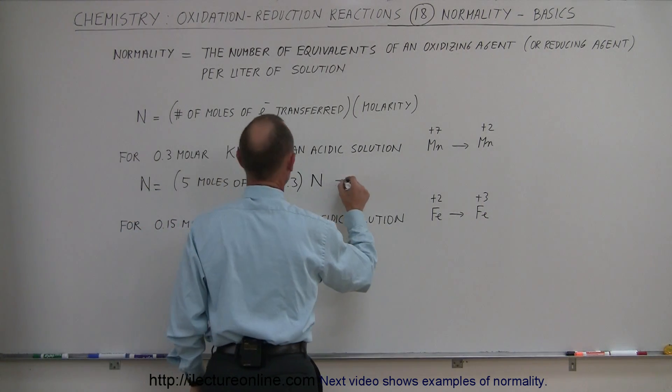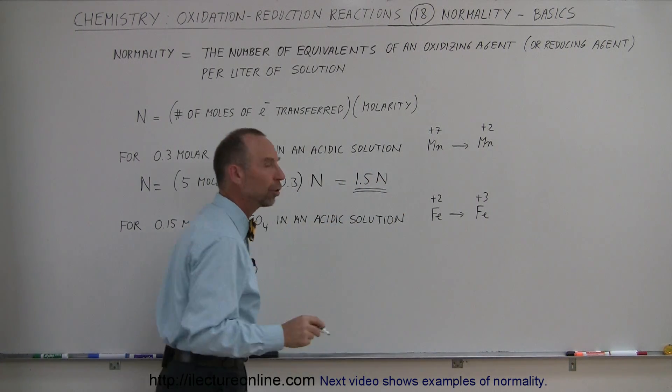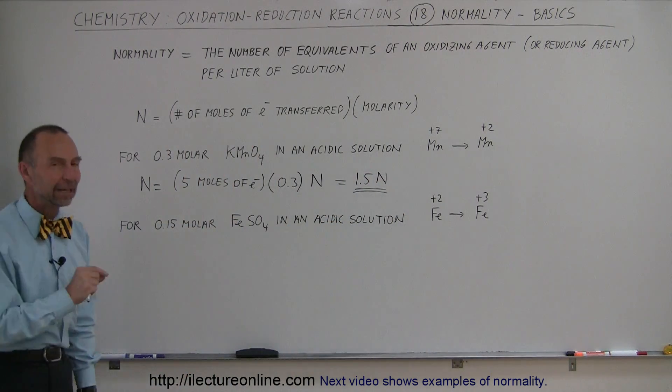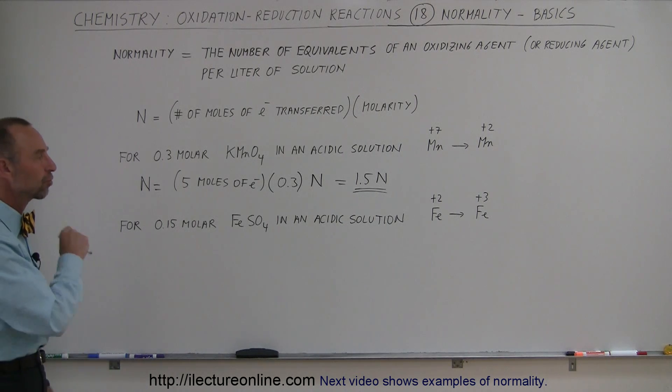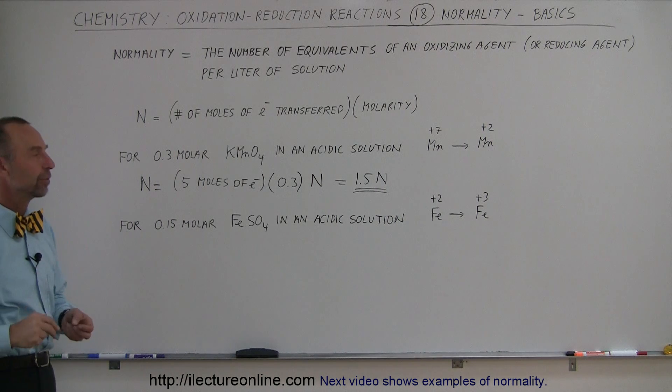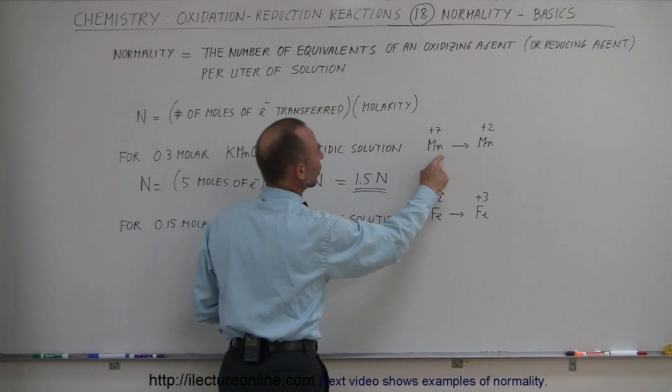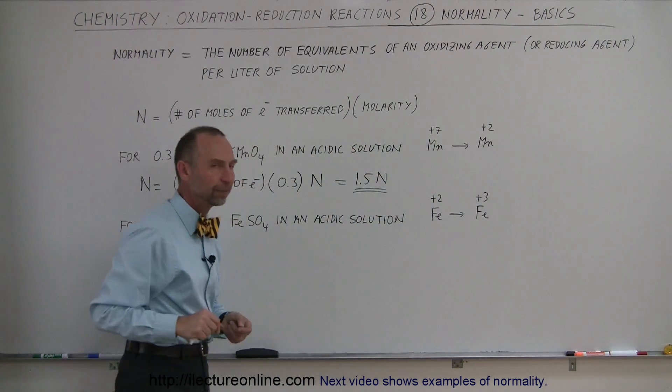So in this case, five times 0.3 is 1.5 N. So that's how we indicate the normality because that indicates the number of moles of electrons transferred in a particular solution where the solution is 0.3 molar. And it's in an acidic situation because in an acidic solution, manganese will go from a plus seven state to a plus two state.